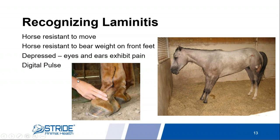Another thing to check is the digital pulse. You simply take your fingers right around the pastern and feel for that pulse. You should be able to feel a pulse normally, but when we say a digital pulse, we're referring to a very strong, pulsating pulse. Go find the digital pulse on your normal horse — then if it gets very strong and pulsating, you will know the difference. You'll also feel some heat in the foot.